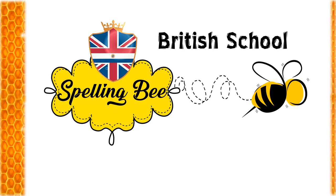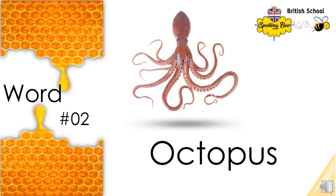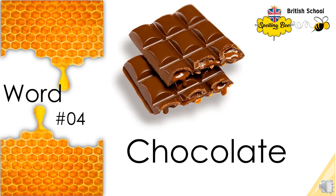British School Spelling Bee Practice, 6th Grade. Family: F-A-M-I-L-Y. Family. Octopus: O-C-T-O-P-U-S. Octopus. Unicorn: U-N-I-C-O-R-N. Unicorn. Chocolate: C-H-O-C-O-L-A-T-E. Chocolate.